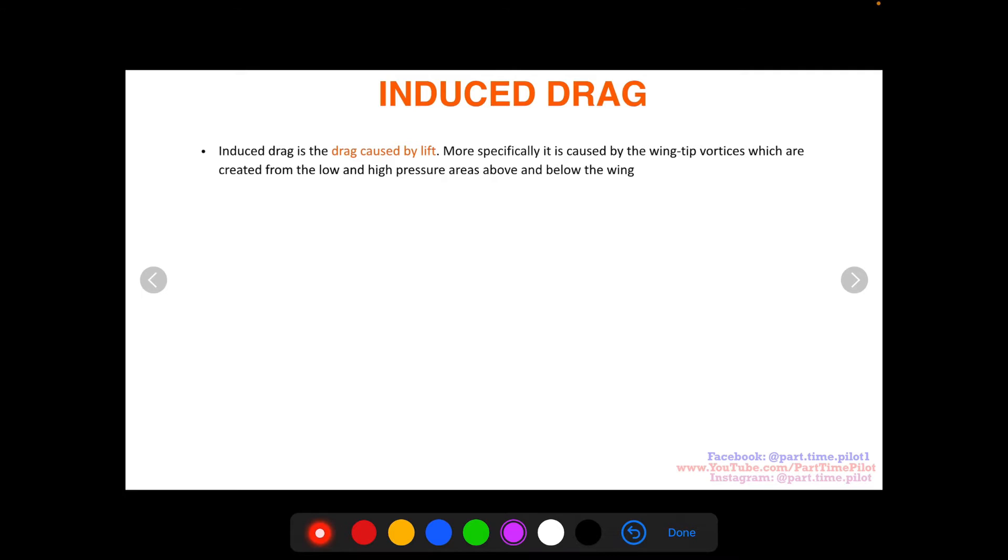What is induced drag? Induced drag is drag caused by lift. That's why it's called induced—it's induced by lift. More specifically, it's caused by the wingtip vortices which are created from the low and high pressure areas that create lift above and below the wing.